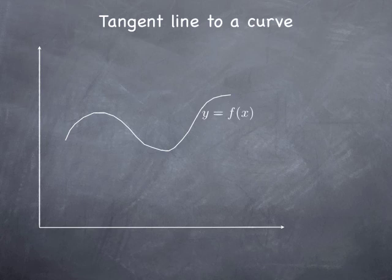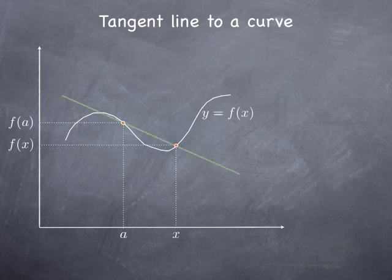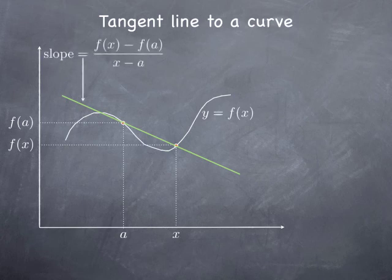So let's say we have the graph of a function f, and we pick a point on the graph. If its first coordinate is a, because the point is on the graph, the second coordinate is f(a). And if we pick a second point on the graph, it's going to have coordinates of the form (x, f(x)). And we look at the secant line joining these two points. Its slope is f(x) minus f(a) over x minus a.